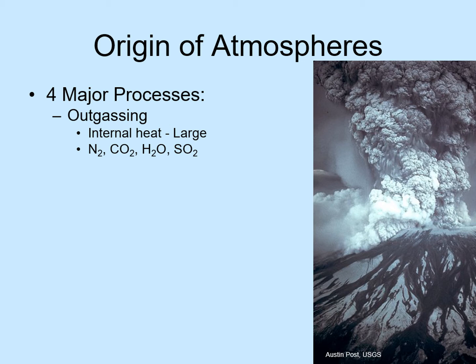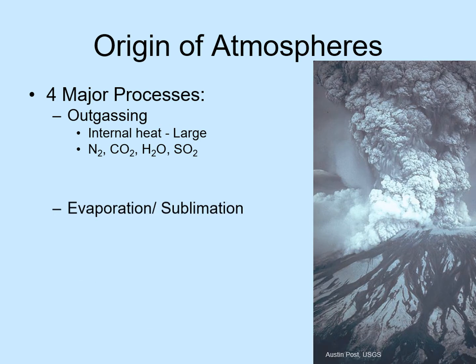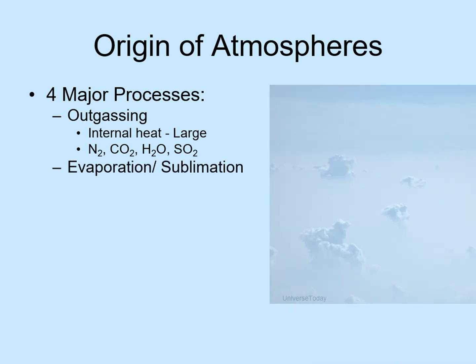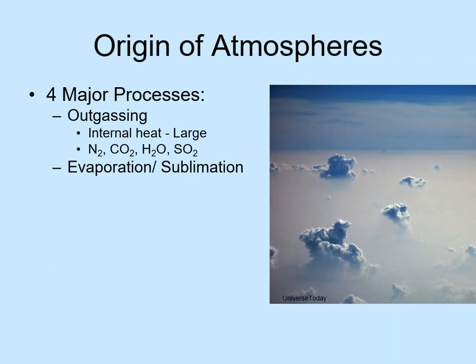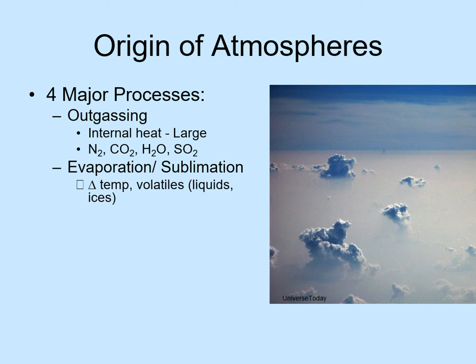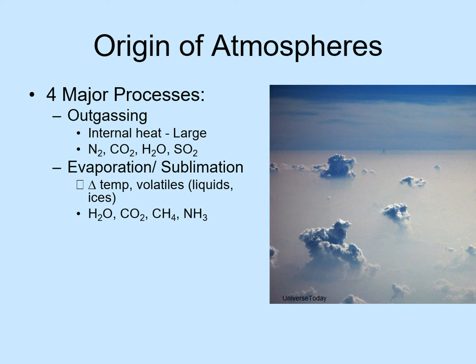The next way to add gas is through evaporation or sublimation. Evaporation means converting liquids to gases, while sublimation is converting solids directly into gases. For this to happen, the world's surface has to heat up, so changing surface temperature is important here. Materials that can evaporate are called volatiles. There are several common volatiles in the solar system, including water, carbon dioxide, methane, and ammonia.